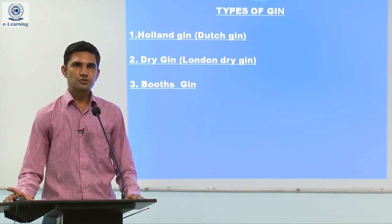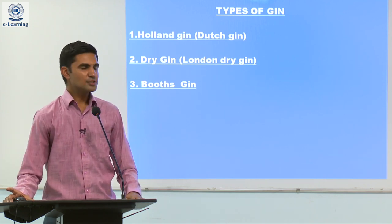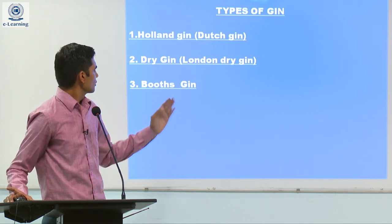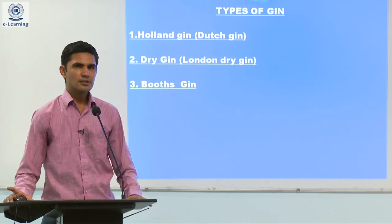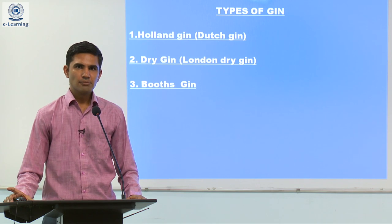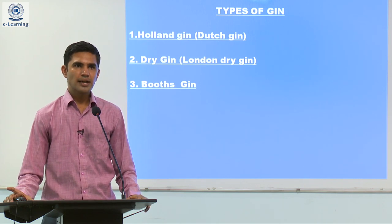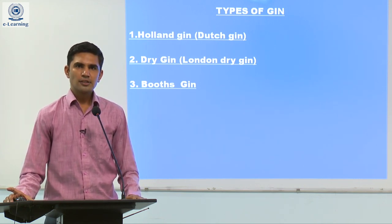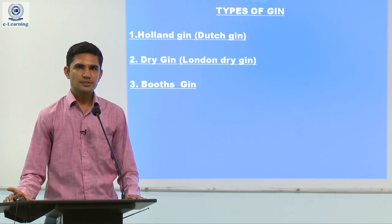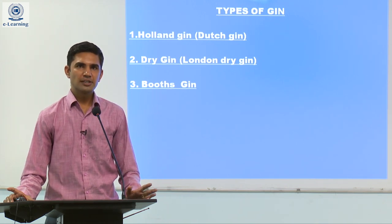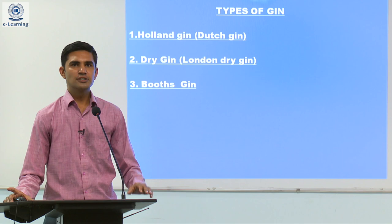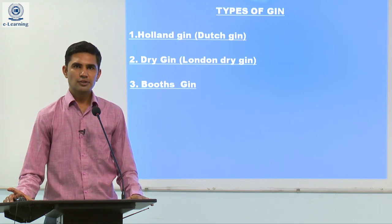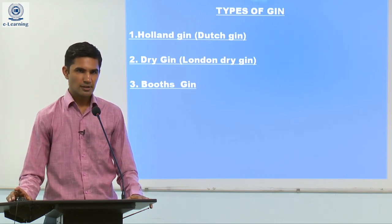The third type is Booth's Gin. It is similar to London Dry Gin but it has a special colour. Booth's Gin is matured in wood casks to give it a golden colour. So all Booth's Gins are golden in colour.